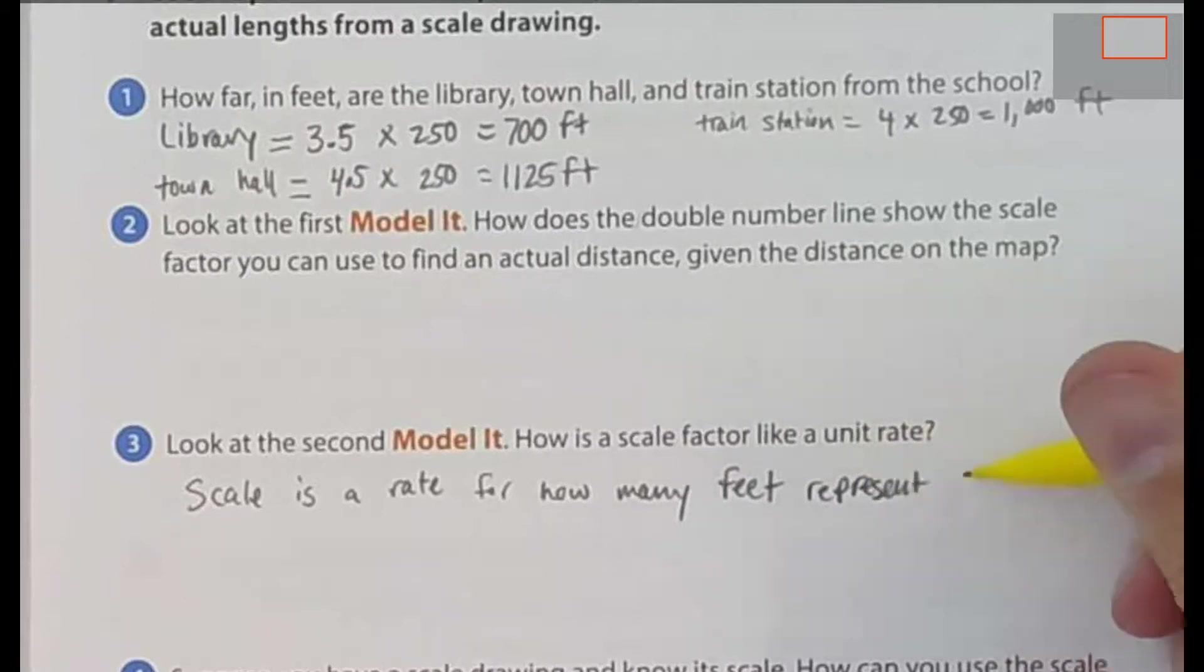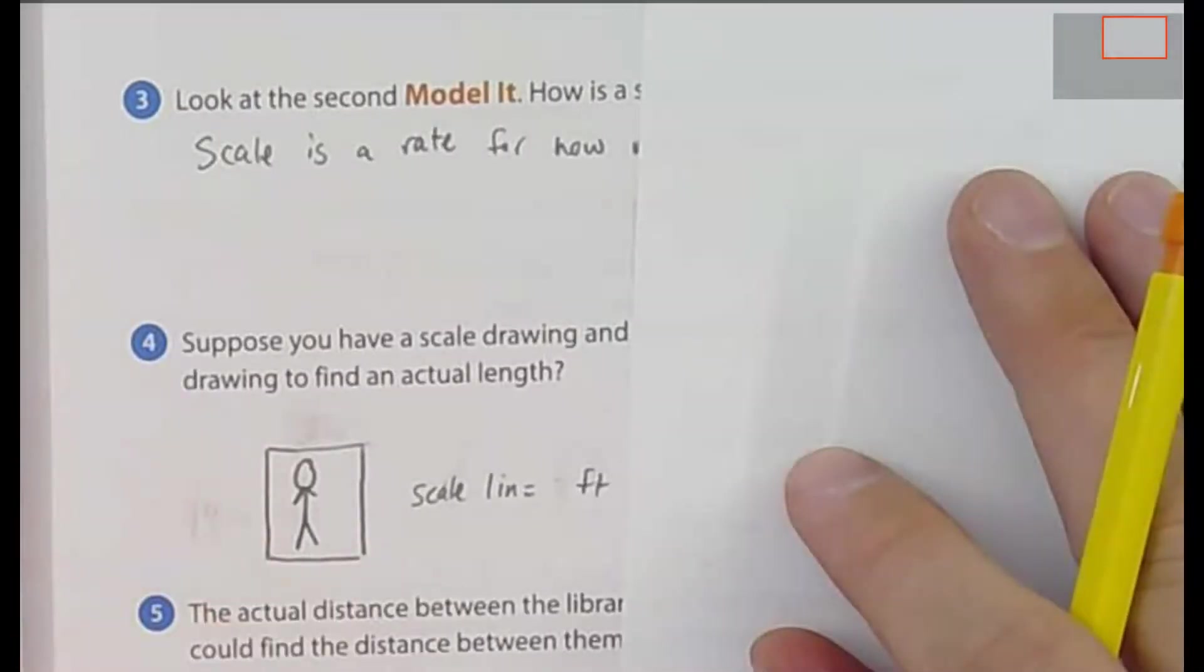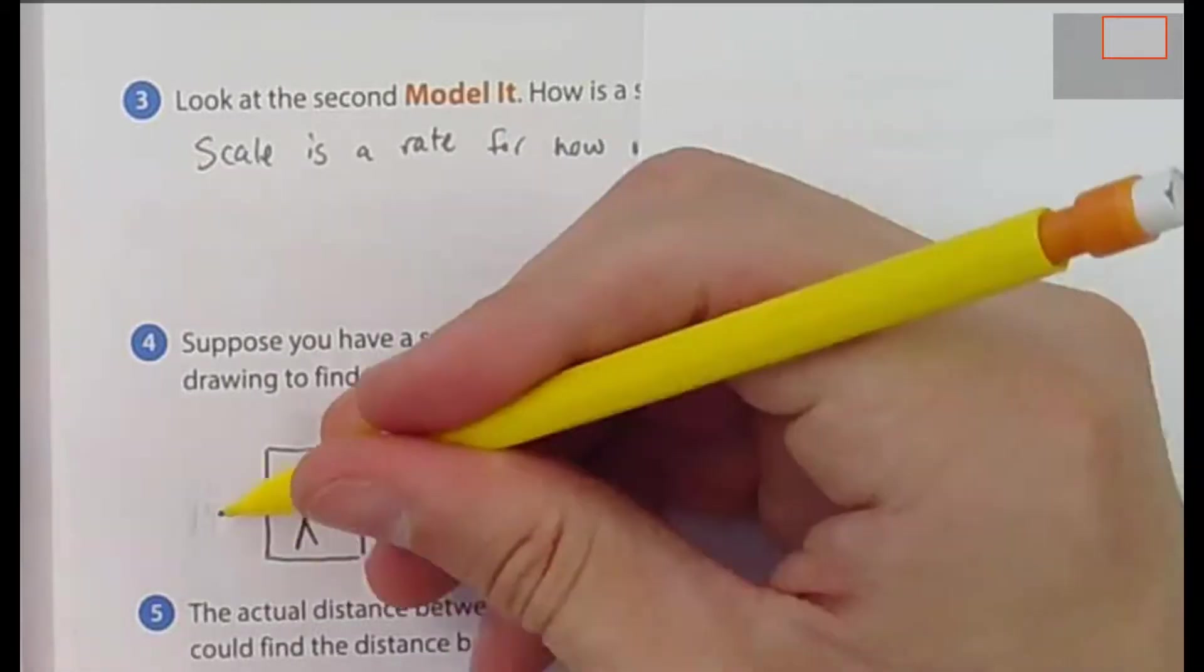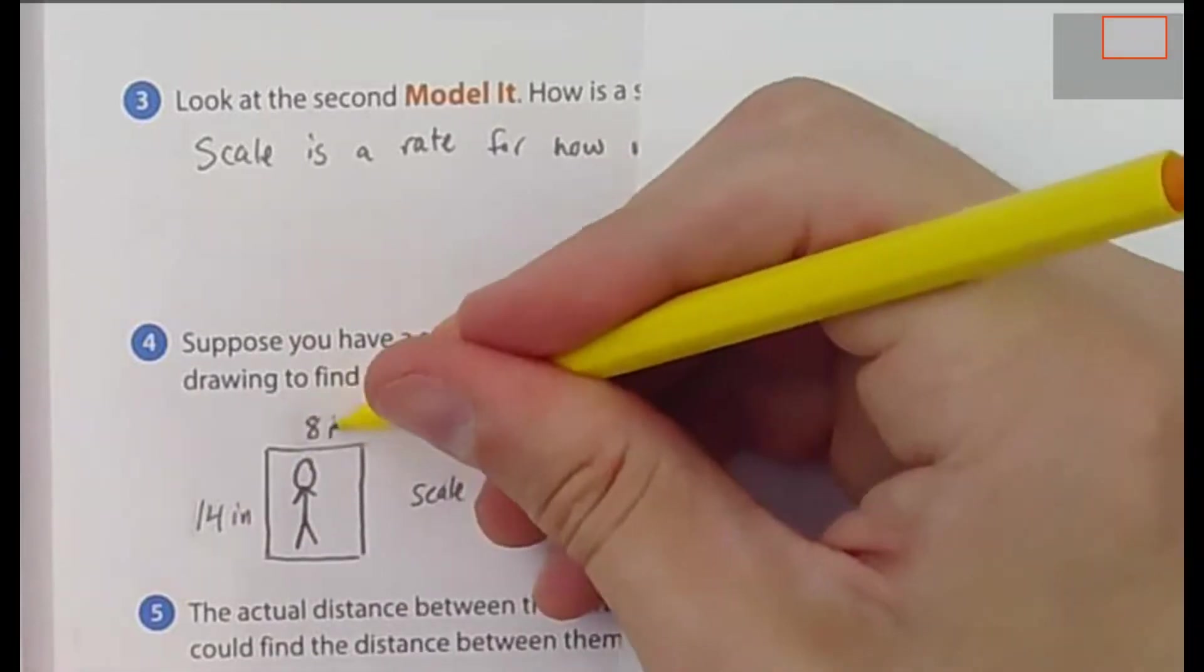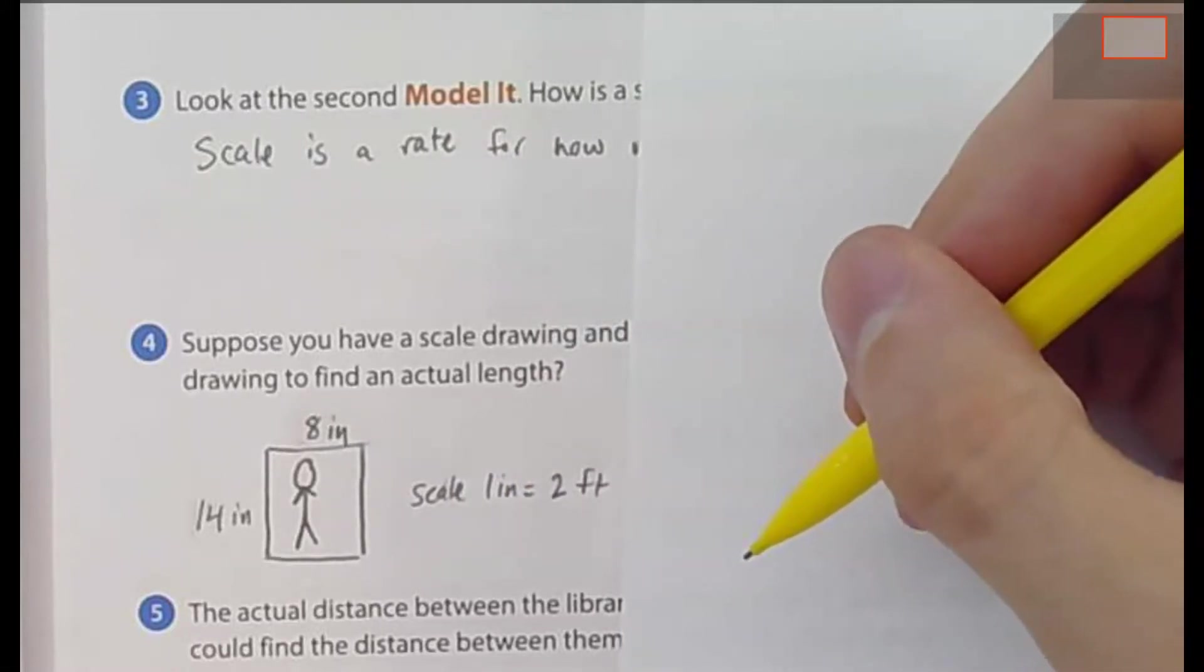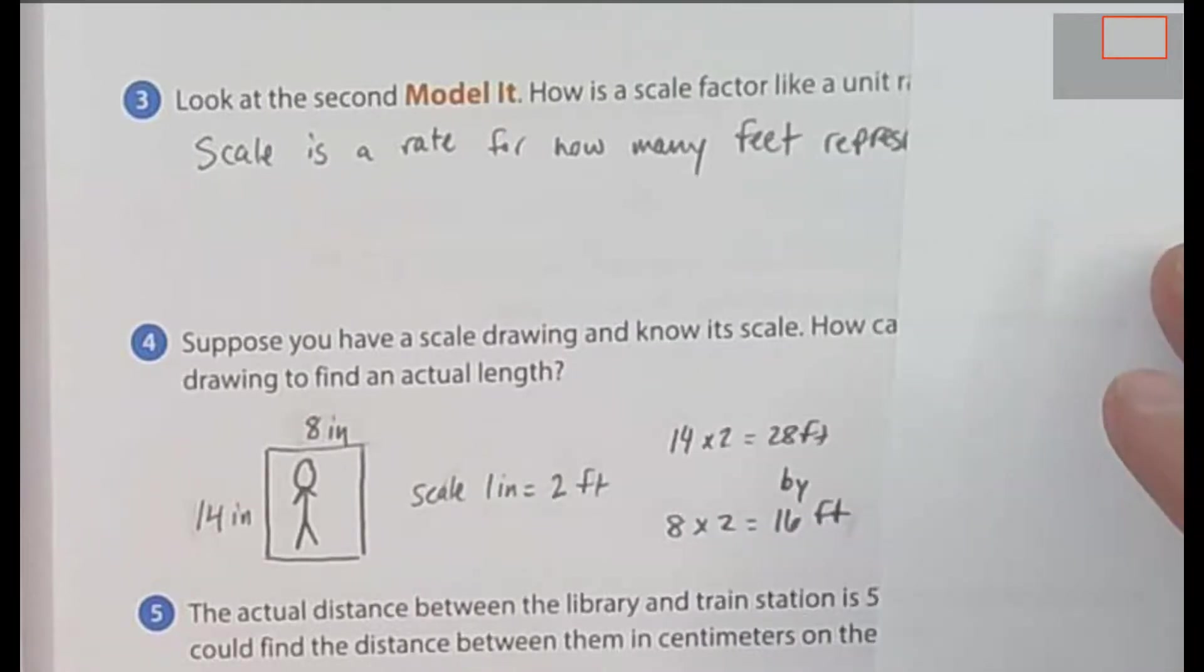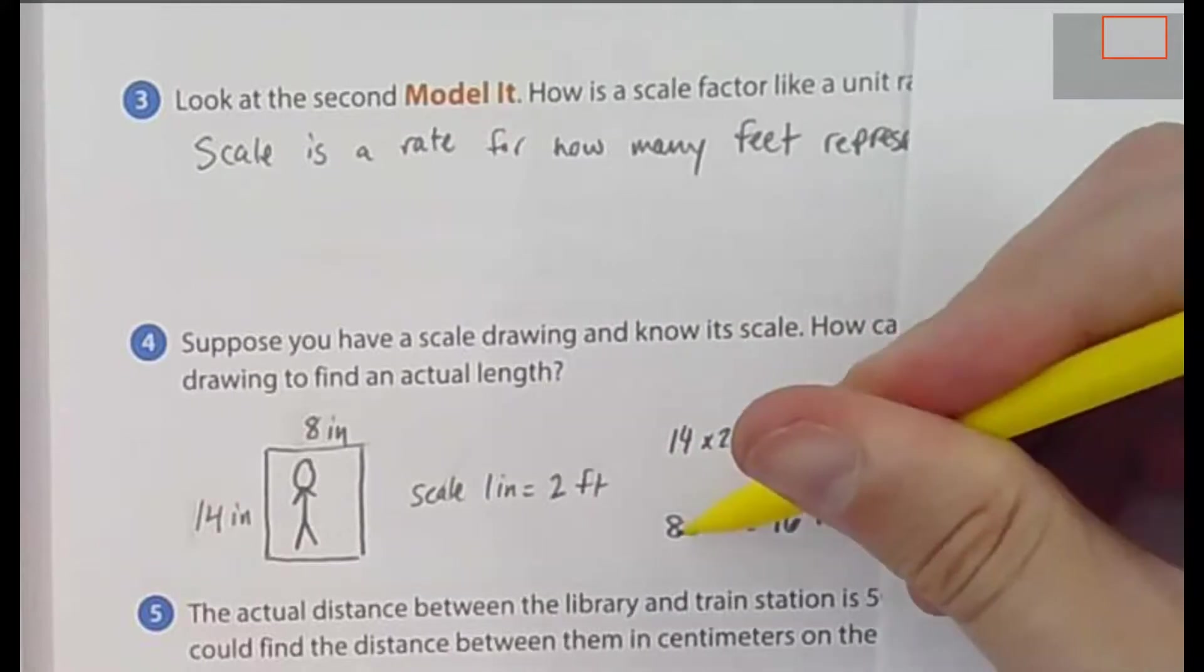So for question 4, we're going to pretend like we have a scale drawing. Let's say we have a portrait, a portrait of President Obama. And the scale is 14 inches to 8 inches. But we know that 1 inch is actually equal to 2 feet. So how would we figure out how big his actual portrait is? Well, simply we'd multiply by the dimensions. So 14 inches times 2 gives us 28 feet. 8 inches times 2 gives us 16 feet. So his actual portrait is 28 feet by 16 feet.